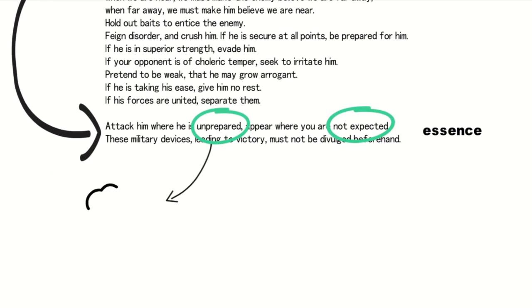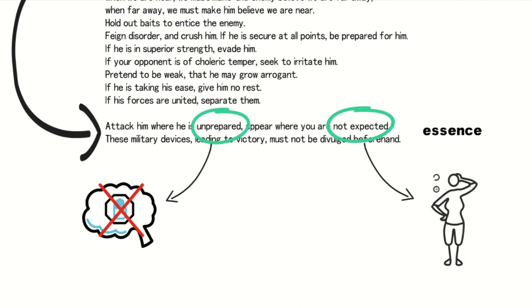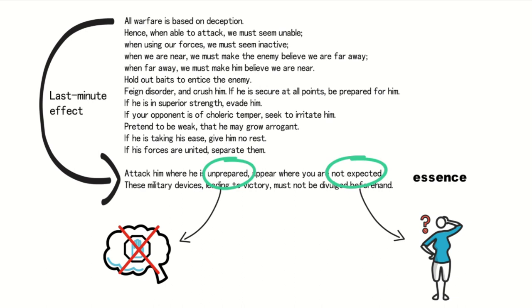Unprepared refers to instances where the enemy lacks preparedness, either in terms of defenses or due to psychological complacency. Unexpected, on the other hand, signifies situations the enemy cannot anticipate. The ultimate goal of all warfare is based on deception is to create the scenario described in this sentence at the critical moment.